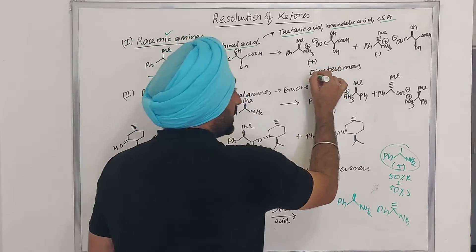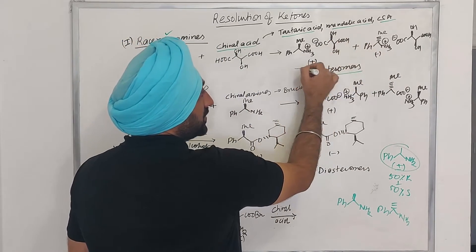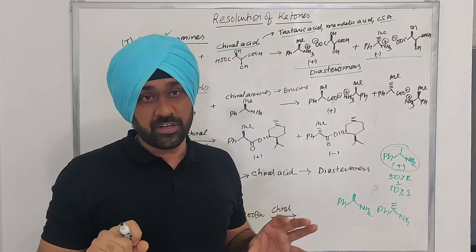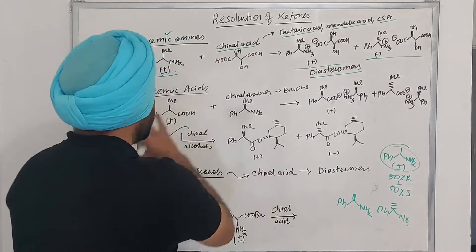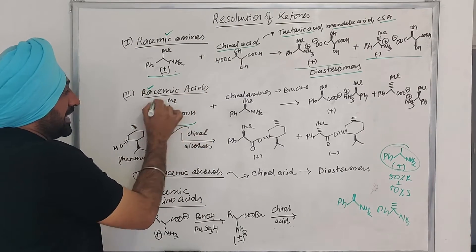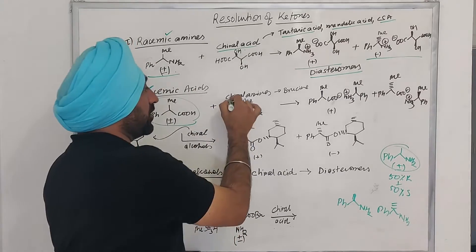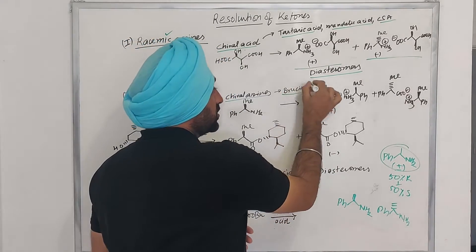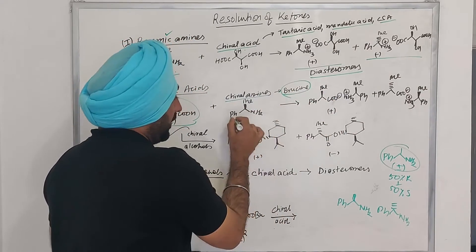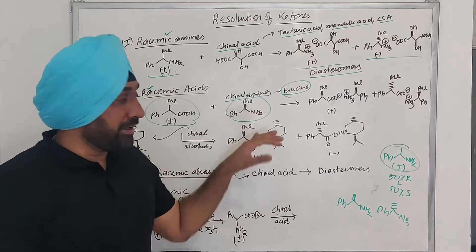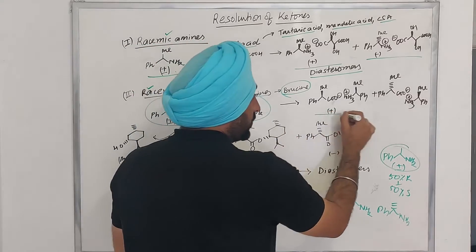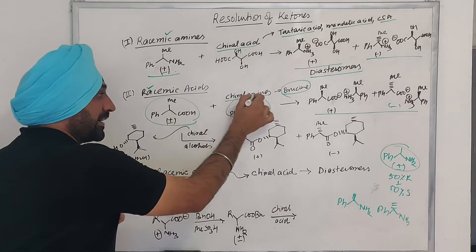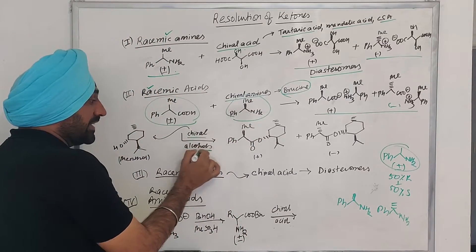What you end up getting is a mixture of diastereomers — these two pairs that are present in the reaction. These two are diastereomers with different physical properties, so you can easily separate them by column chromatography or crystallization. Similarly, if you are given a racemic acid, we know that the racemic acid can be reacted with a chiral amine. The most common example is the use of brucine, which is an amine. Nowadays people also use alpha-methylphenylamine. The same aim is to make a pair of diastereomers in the reaction mixture which can be easily separated. Apart from that, we can also carry out the reaction with chiral alcohols.